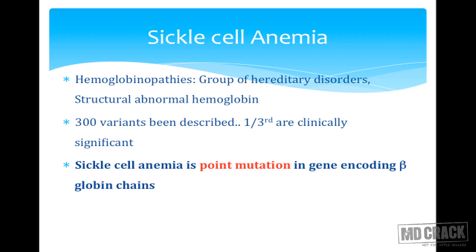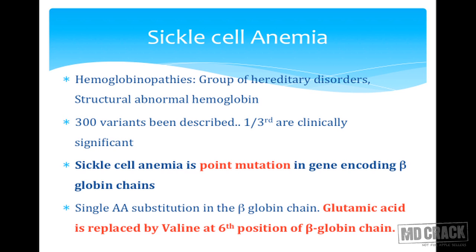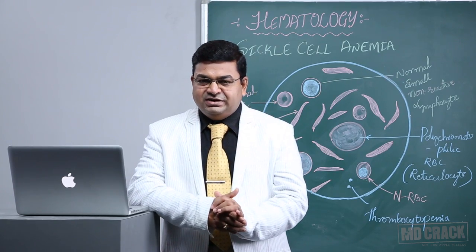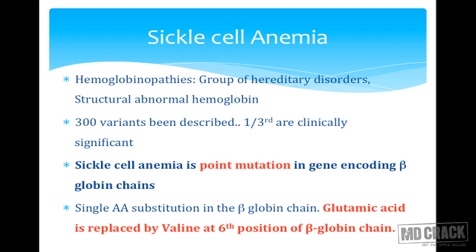What is sickle cell anemia? It is mainly due to a point mutation in the gene encoding the beta-globin chain. At the sixth position of the beta-globin chain of hemoglobin, there is replacement of a single amino acid — glutamic acid is replaced by valine. So it is a point mutation; that single amino acid replacement is enough to cause the disease.